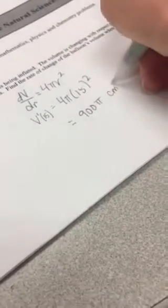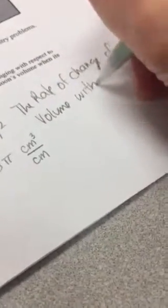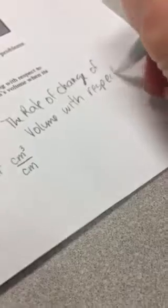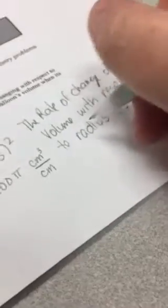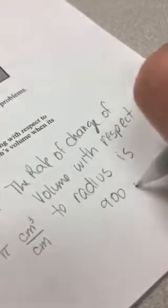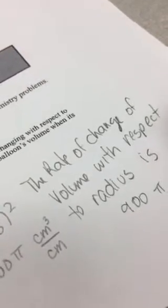Now, what units am I in? It's really easy. It's just these units over these units. So we're going to say volume is centimeters cubed by centimeters. Word problem: the rate of change of volume with respect to radius is 900 pi centimeters cubed per centimeter.